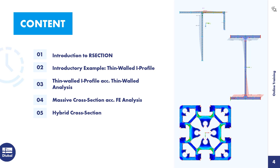Using several examples I would like to show you the modeling options and design methods in the program. In the first example, a thin-walled eye profile is modeled with graphic functions. In another example I show how to insert cross-sections from the database and add other parts. Then I show modeling of a massive cross-section based on a DXF template, and finally I model a hybrid cross-section.